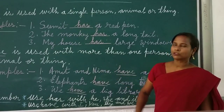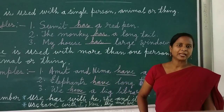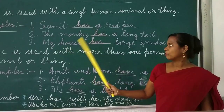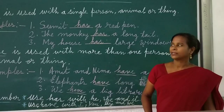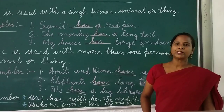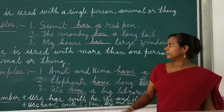It is also single — monkey is also single, my house is also single. How do you know it is single? There is no 's' after monkey and no 's' after house — so it is clear they are singular.